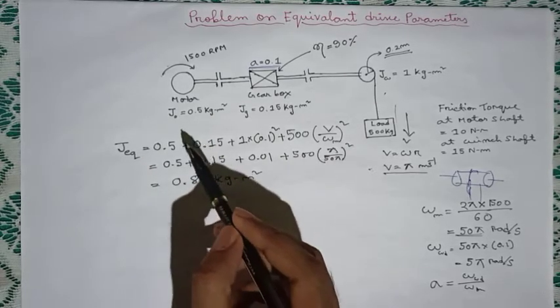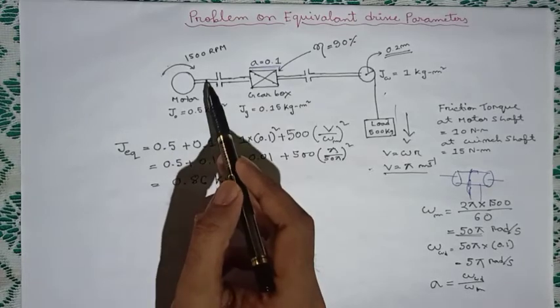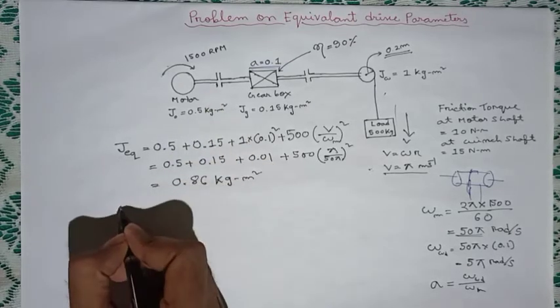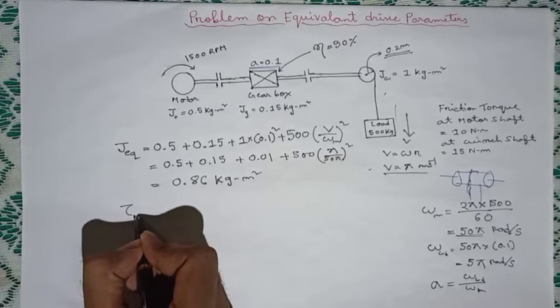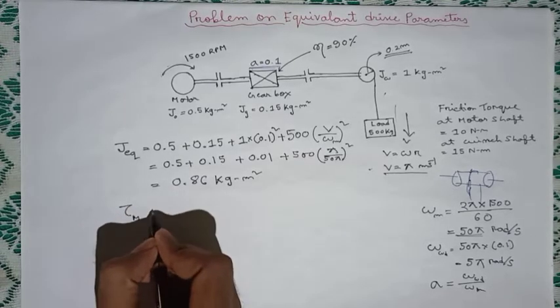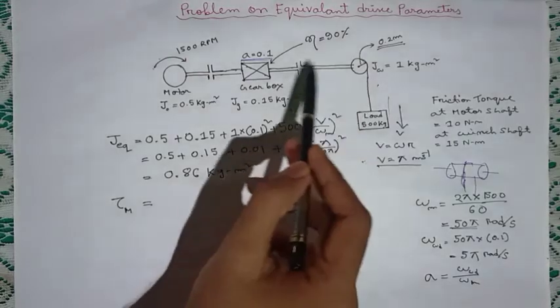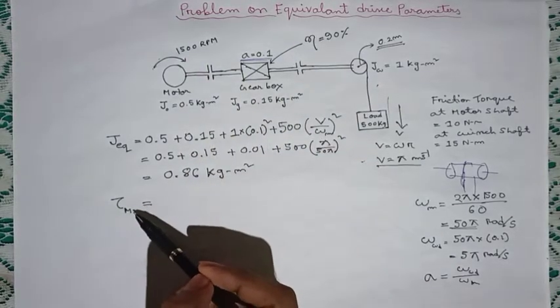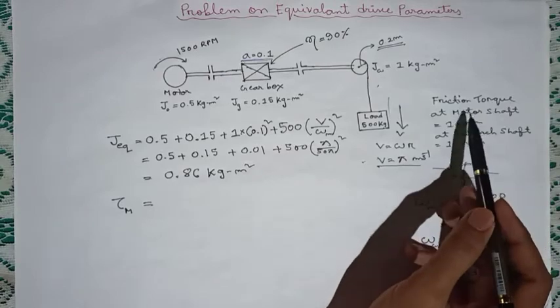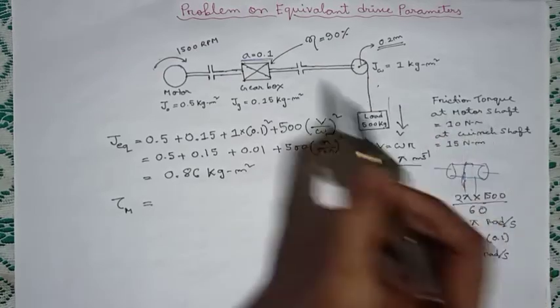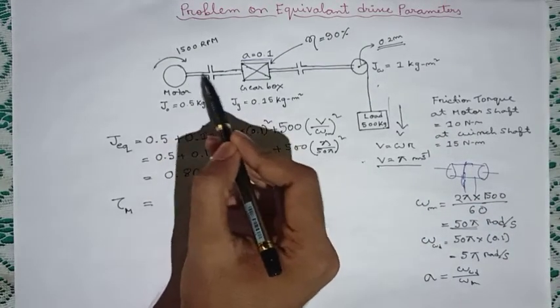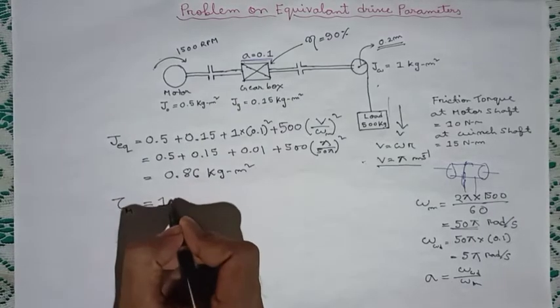We will find the motor torque. This motor torque will balance all the load torque that the system offers. So first it will balance the friction torque which is at the motor shaft here. So we can directly write that, that is 10 Nm.